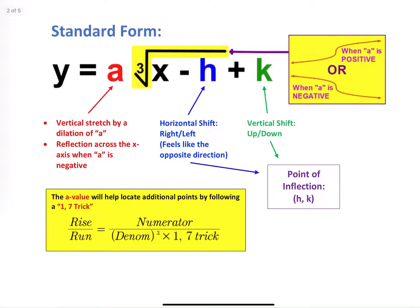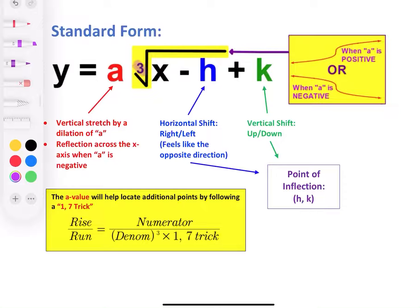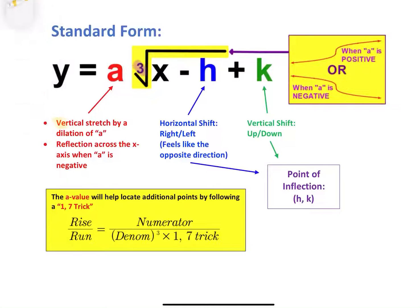A cubed root function in standard form looks very similar to what we did with our square root function. The only difference is that we have this little 3 right next to our radical, which tells us that we have a cubed root. Now we do have an a, an h, and a k. We are not going to be working with any horizontal stretches for this particular video — we're only going to do a vertical stretch, and that's basically what our a value tells us. So our a value will show a vertical stretch by a scale factor, or a dilation, of whatever that a value might be.